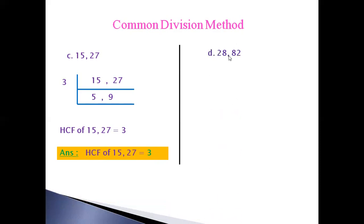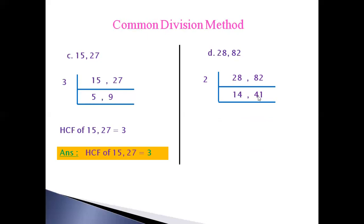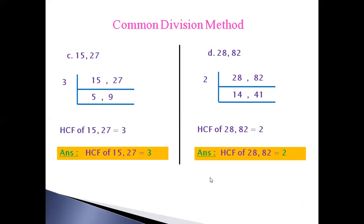D sum: 28 and 82. Here both are even numbers — 28 and 82. So first we can select the two table. 28 divided by 2 gives 14, and 82 divided by 2 gives 41. Next, looking at 14 and 41: 14 we can divide by the two table, but 41 we cannot divide by 2 — it is a prime number, divisible only by 41. So they don't have any common factor. That's why we stop the process. HCF of 28 and 82 is equal to 2 only.